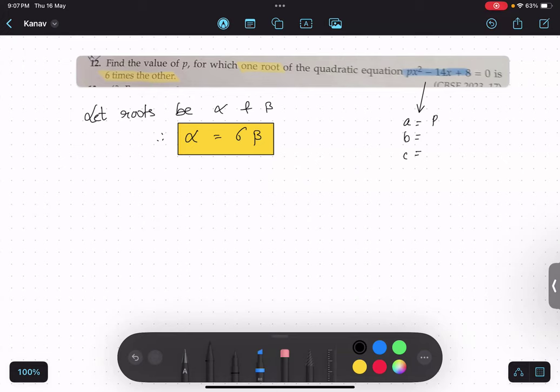A is what? A is p. B is what? Minus 14. And c is what? 8. So this thing is important for us. So we will be using this.